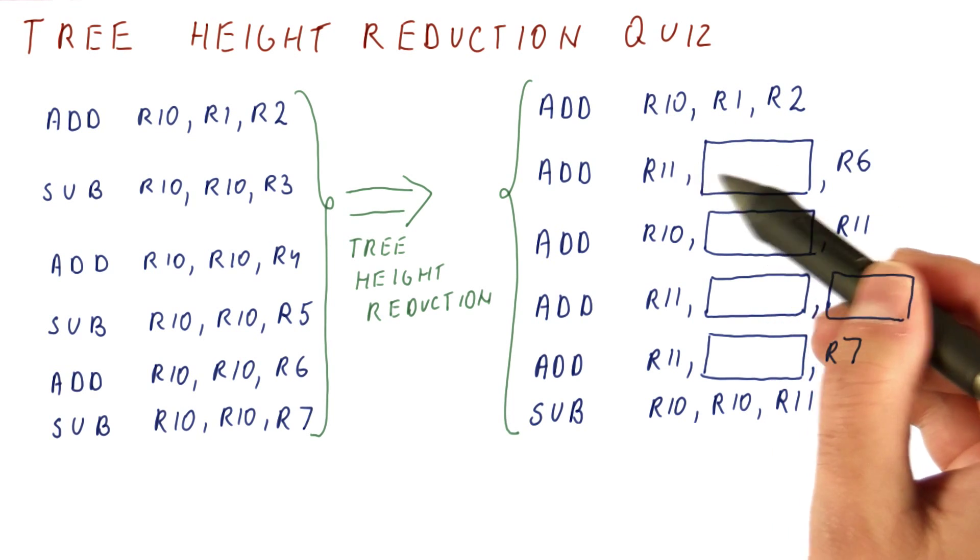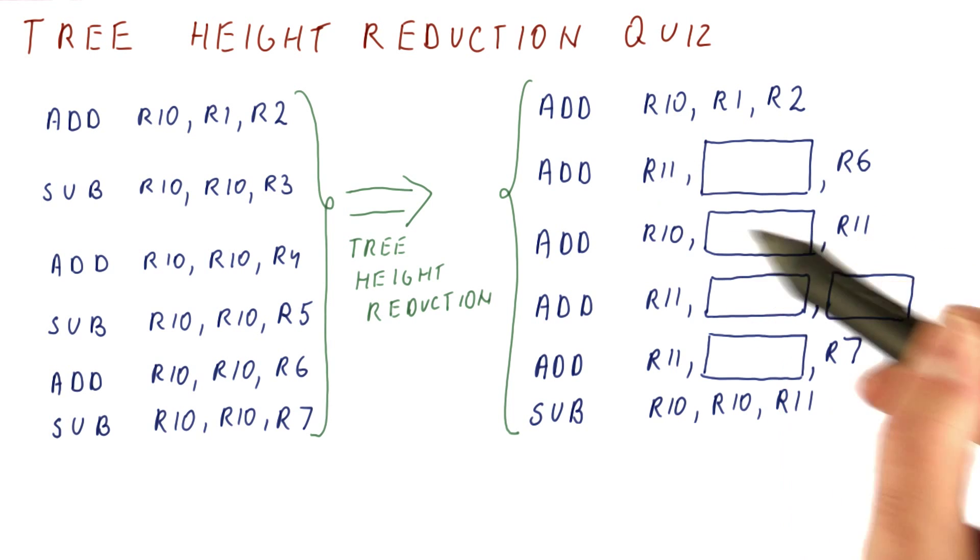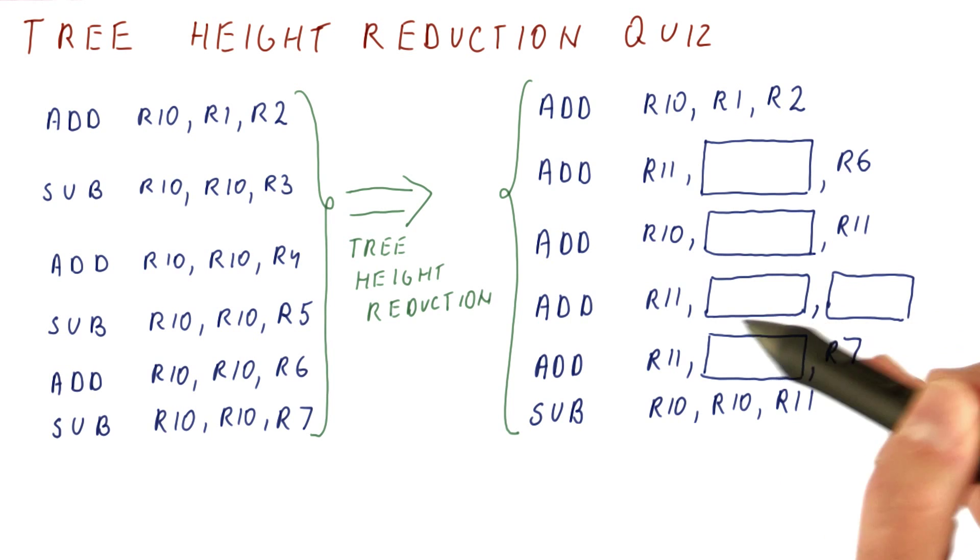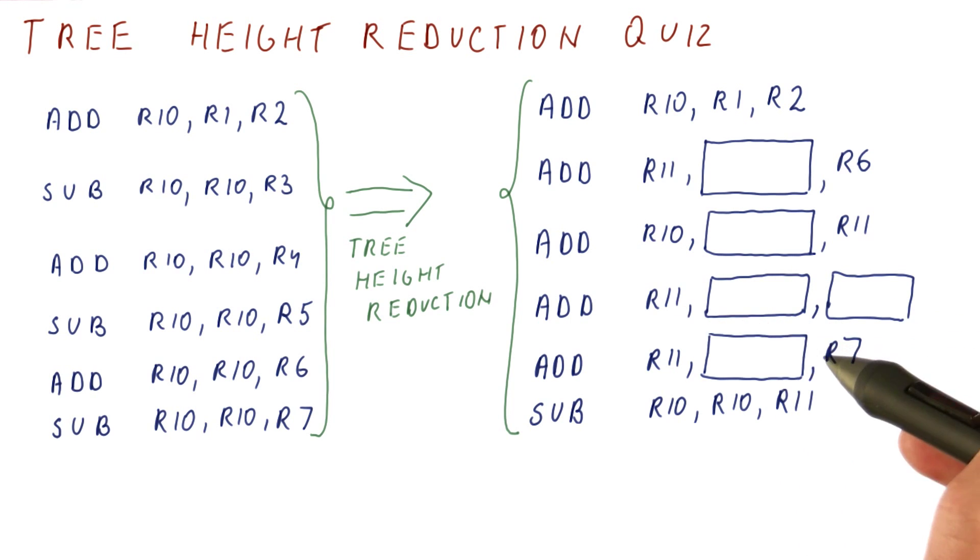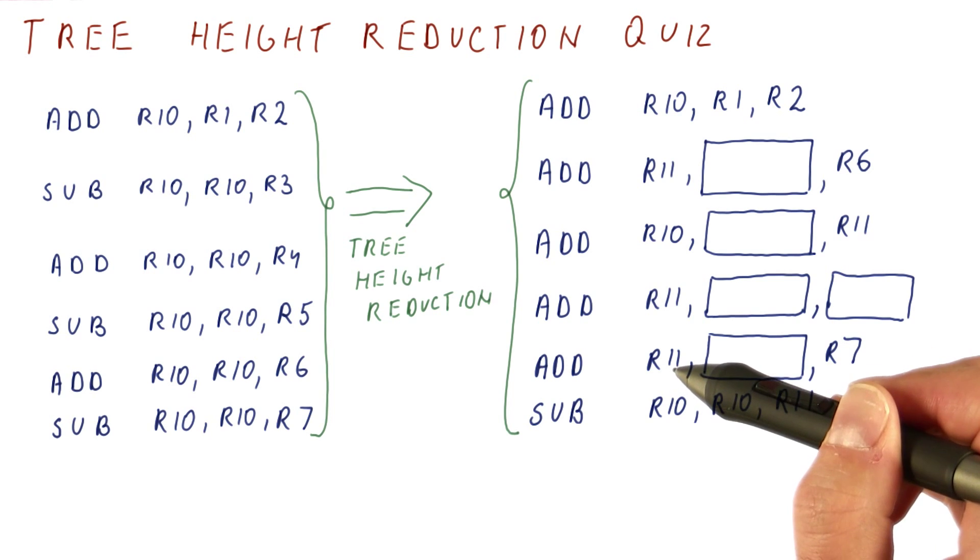But then, what do we add and put in R11? What do we add R11 to and put that in R10? What do we then add up and put the result in R11? And then we add R7 to what and put the result in R11?